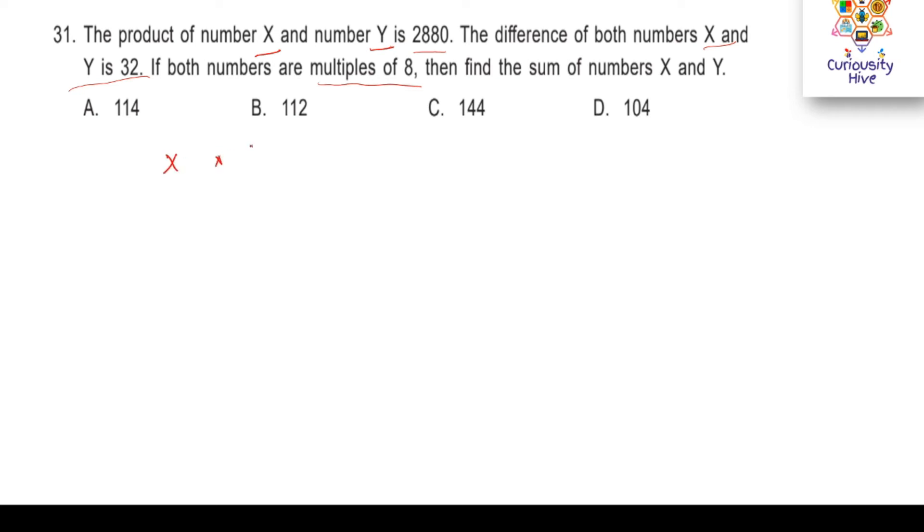The two clues that we have here is that the product of x and y is equal to 2880 and the second one is that the difference in both numbers, that is x minus y, is equal to 32 and both of these numbers are multiples of 8. That means 8 times something is equal to x and 8 times something is equal to y and we need to find what is x plus y.